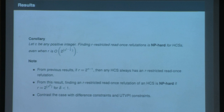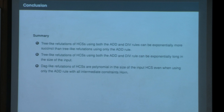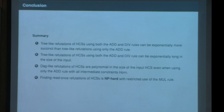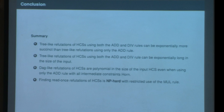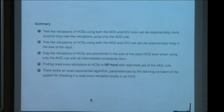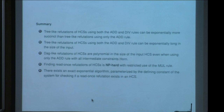Key conclusions: tree-like refutations of horn constraint systems using add and div can be exponentially more succinct than using only add; tree-like refutations using add and div can still be exponentially long; dag-like refutations are polynomial even using only the add rule; finding read-once refutations is NP-hard with a restricted mul rule. An exact exponential algorithm parameterized by the system's defining constant can check if a read-once refutation exists.